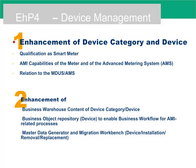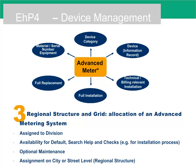This and the few slides below are a summary of enhancements to device management due to AMI activation. Enhancements include: device category and device qualification as smart meter; AMI capabilities of the meter and of the advanced metering system (AMS); relation to the MDUS and AMS; enhancement of business warehouse content of device category and device; business object repository for device, to enable business workflow for AMI related processes; master data generator and migration workbench for device installation, removal, and replacement; and regional structure and grid allocation of an advanced metering system.